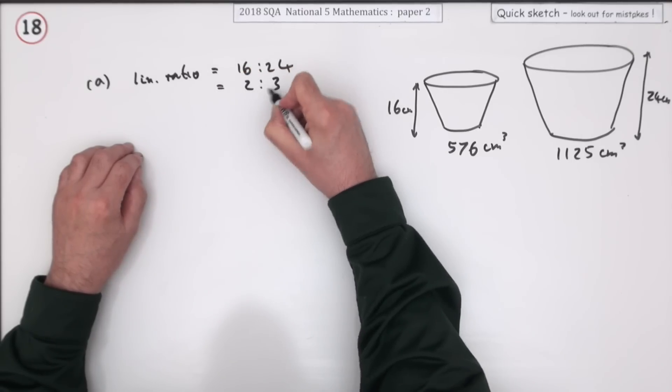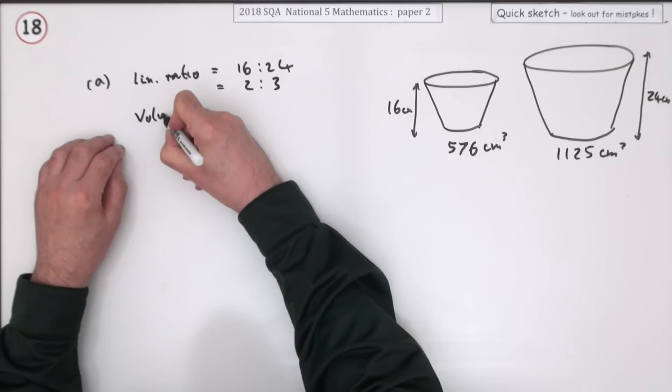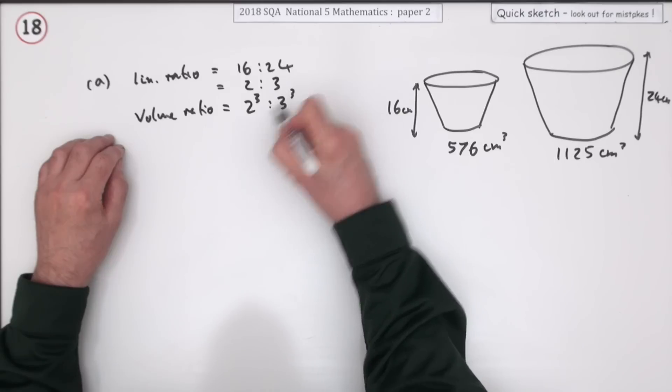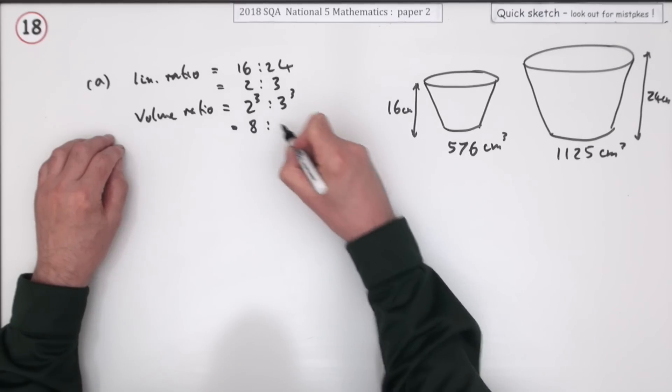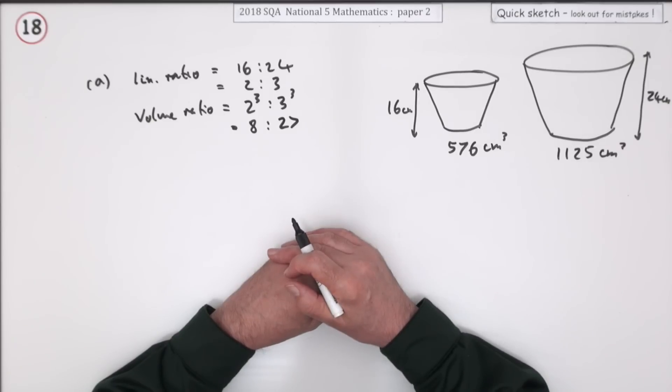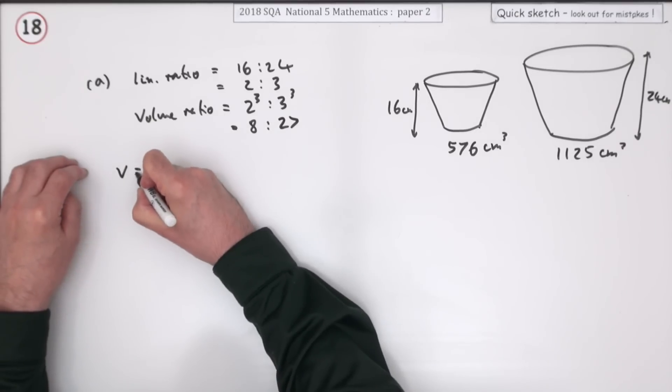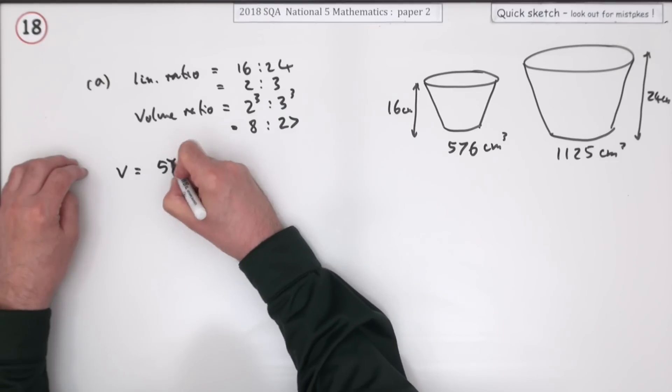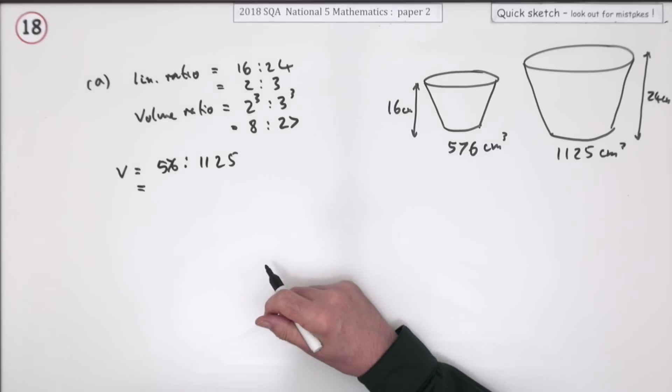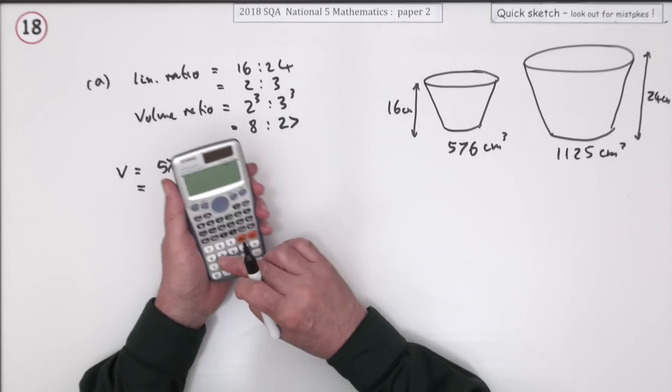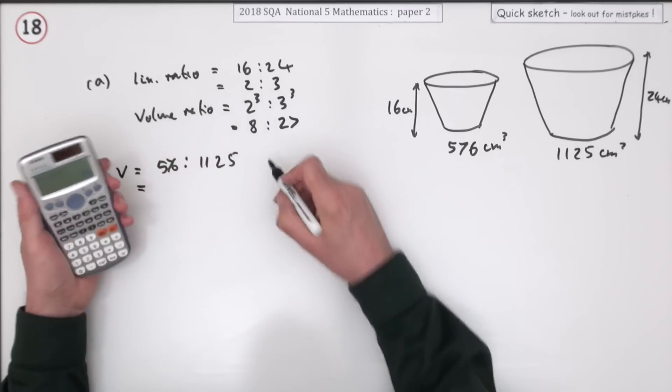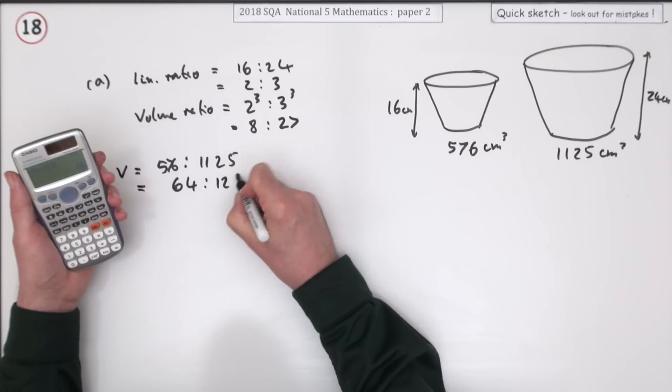That means the volume ratio should be the cube of that, so the ratio of the volumes should be 8 to 27. Are they in the ratio of 8 to 27? Let's find out: it's 576 to 1125. Using the calculator, 576 divided by 1125 comes out as 64 to 125.